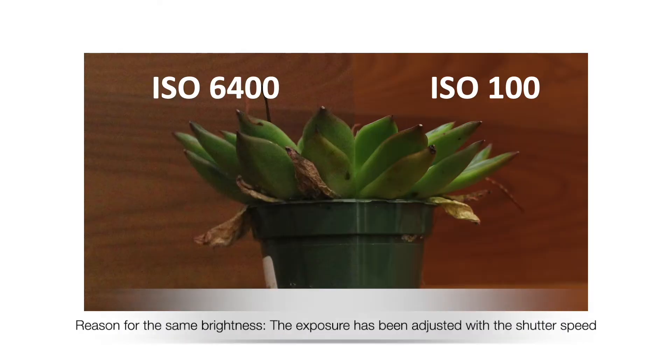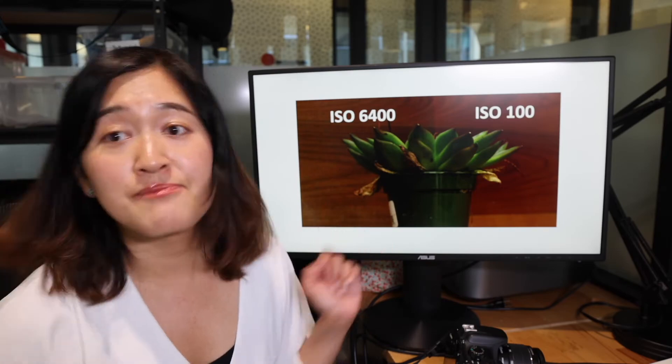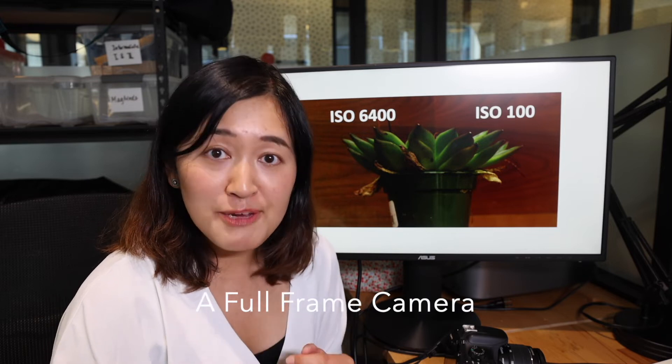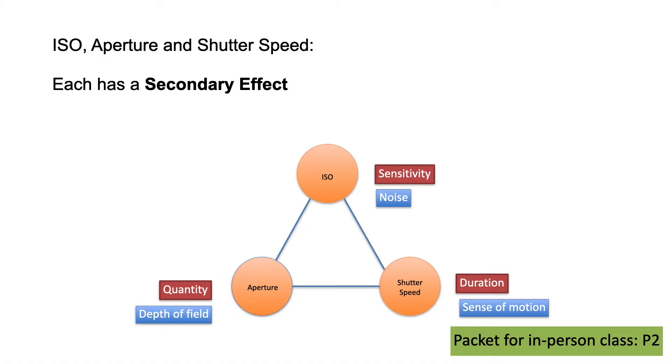For ISO, when you raise the ISO, your camera can pick up more light and your picture becomes brighter. But at the same time, you're also introducing a lot of grains to your picture. Those grains in photography we call the noise. At ISO 6400 you can see there are a lot of noise or grains on the image, whereas at ISO 100 the image is cleaner. One way to fix it is to buy a more sophisticated camera, like a full frame camera, where bumping up the ISO produces less grain. So the secondary effect of ISO is grain.